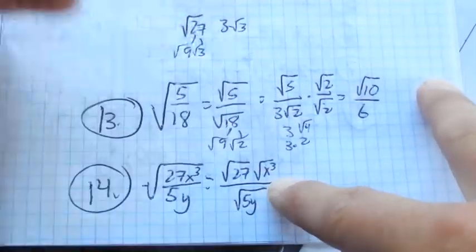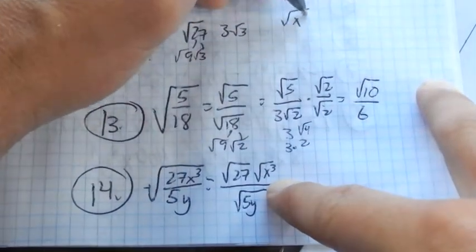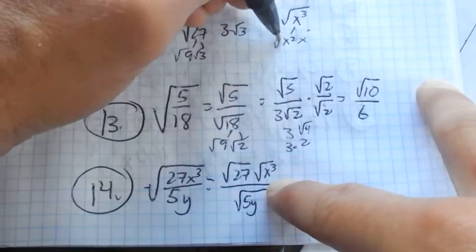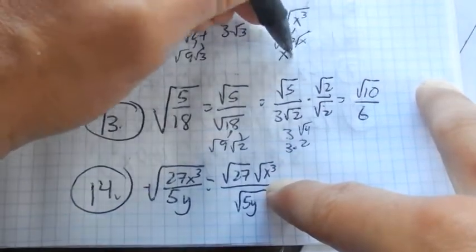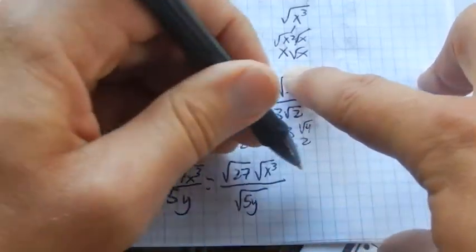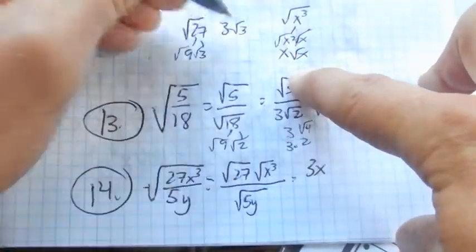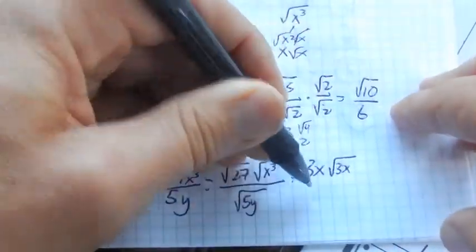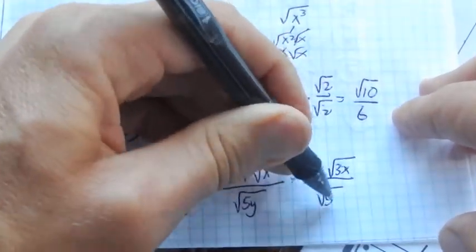Square root of x cubed. x cubed, I can split into x squared times x. They're both square rooted. Square root of x squared is x. Square root of x. So if I combine these, I have 3x root 3x over square root of 5y.